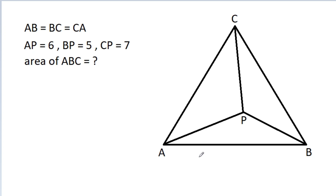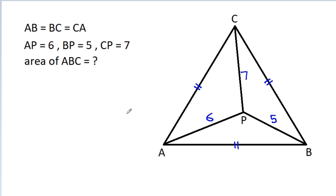In this video, we have given that AB is equal to BC is equal to CA, and AP is 6, BP is 5, and CP is 7. We have to find the area of triangle ABC.